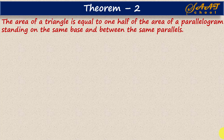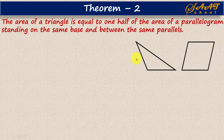Now here we are at Theorem 2. The theorem statement is: the area of a triangle is equal to one half of the area of a parallelogram standing on the same base and between same parallels. So if this triangle and this parallelogram are standing on the same base and between same parallels, then the area of the triangle equals half the area of the parallelogram.